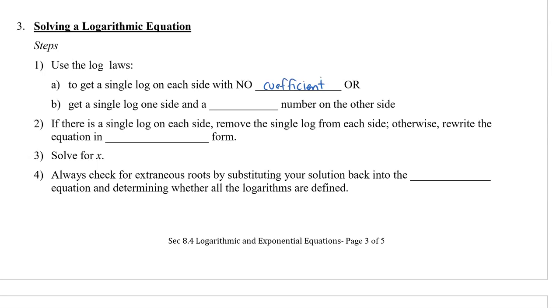The second situation is you can get a single log on one side and then a constant number on the other side. If there is a single log on each side, you can remove the log and then solve for x. Otherwise, if you have a single log on one side and a constant number on the other side, you're going to rewrite the equation in exponential form.